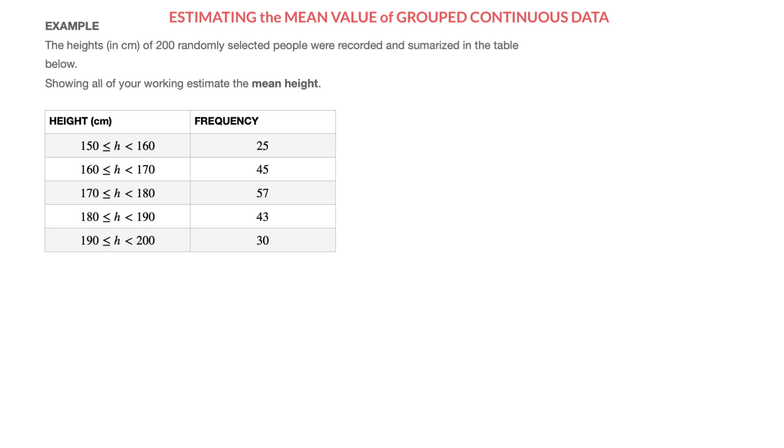In this video, we learn how to estimate the mean value of grouped continuous data written in a frequency table. We're going to work through an example where the heights in centimeters of 200 randomly selected people were recorded and summarized in the table below. We're told showing all of your working estimate the mean height.